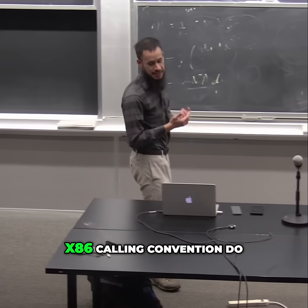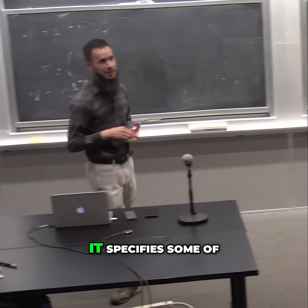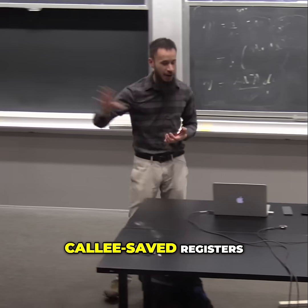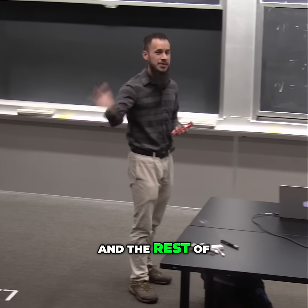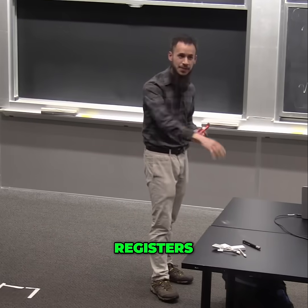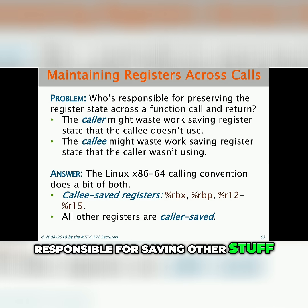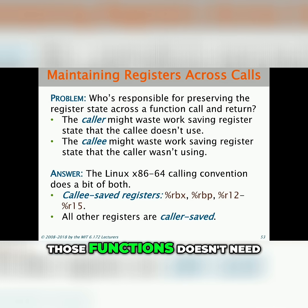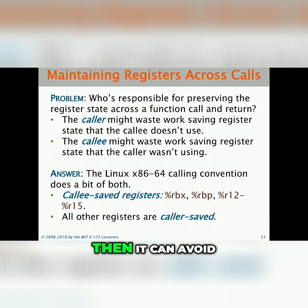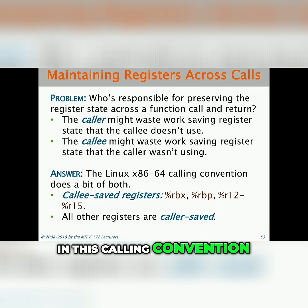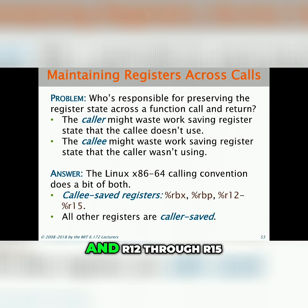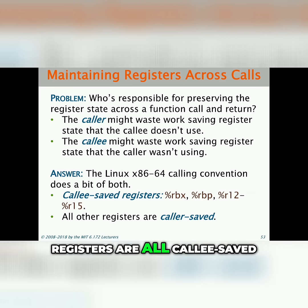So what does the x86 calling convention do? It specifies some registers as callee-saved registers and the rest as caller-saved registers. The caller is responsible for saving some, and the callee is responsible for saving others. If either function doesn't need one of those registers, it can avoid wasted work. In x86-64, the registers RBX, RBP, and R12 through R15 are all callee-saved, and the rest are caller-saved.